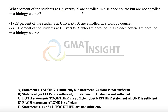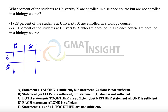What percent of the students at University X are enrolled in a science course but are not enrolled in a biology course? Let's define our categories: students enrolled in a science course, students not enrolled in a science course, students enrolled in a biology course, and students not enrolled in a biology course. We have to find the value of X as a percentage of the total students.